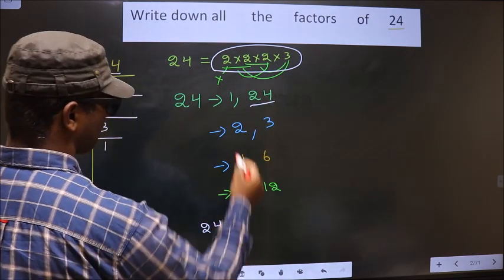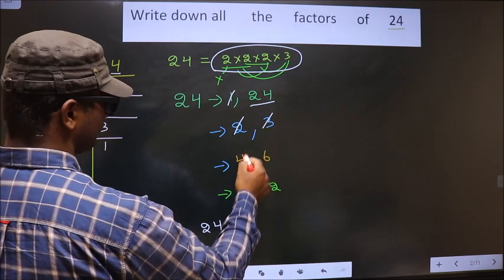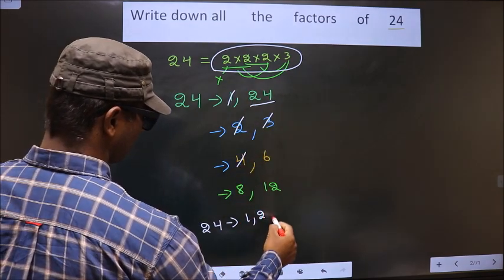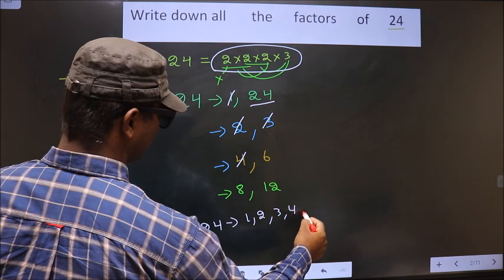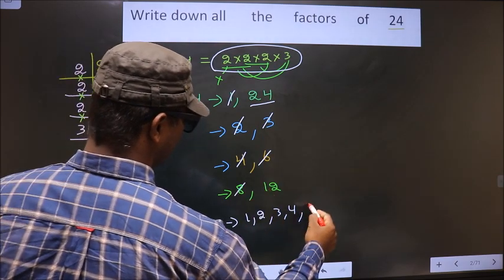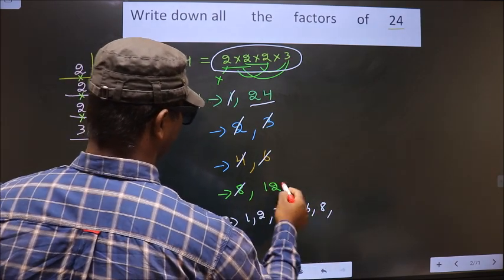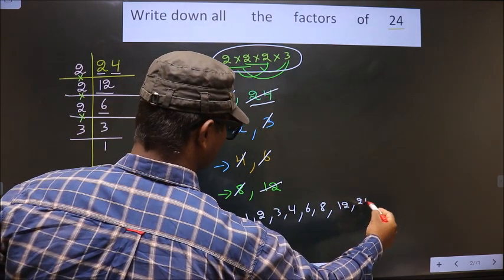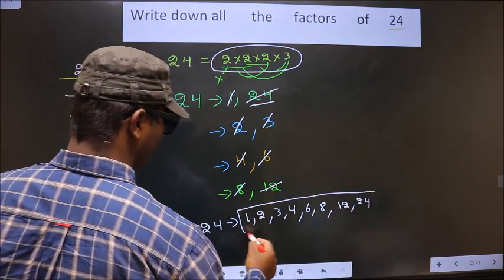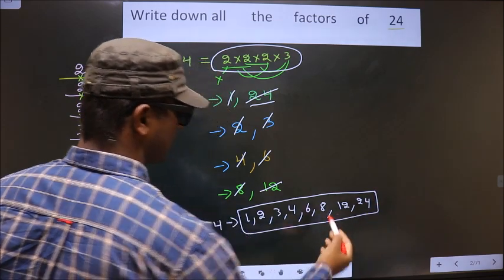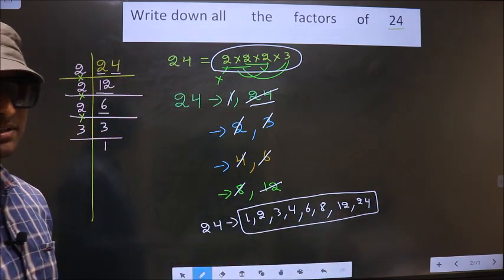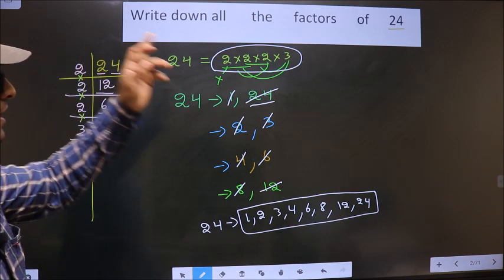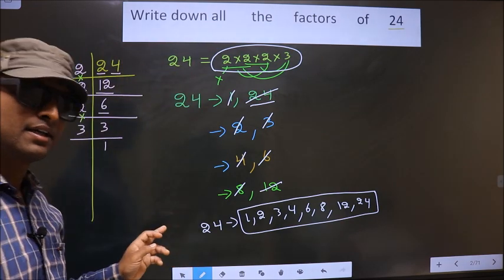That is 1, 2, 3, 4, 6, 8, 12, 24. So this is our answer. Am I clear?